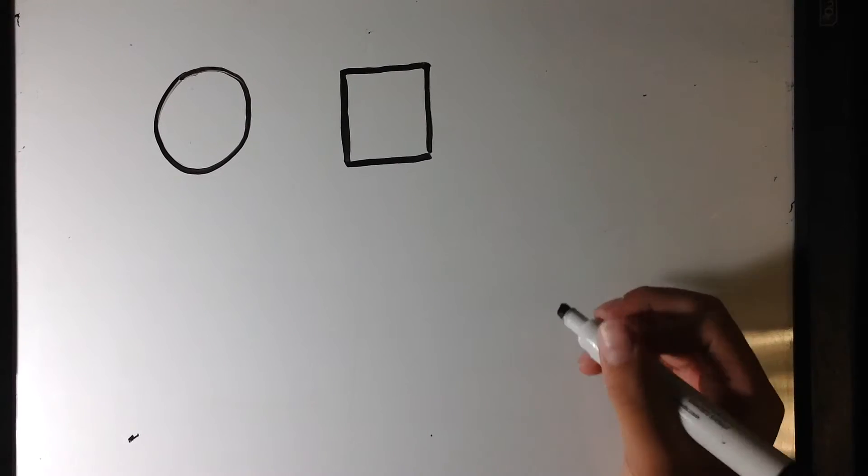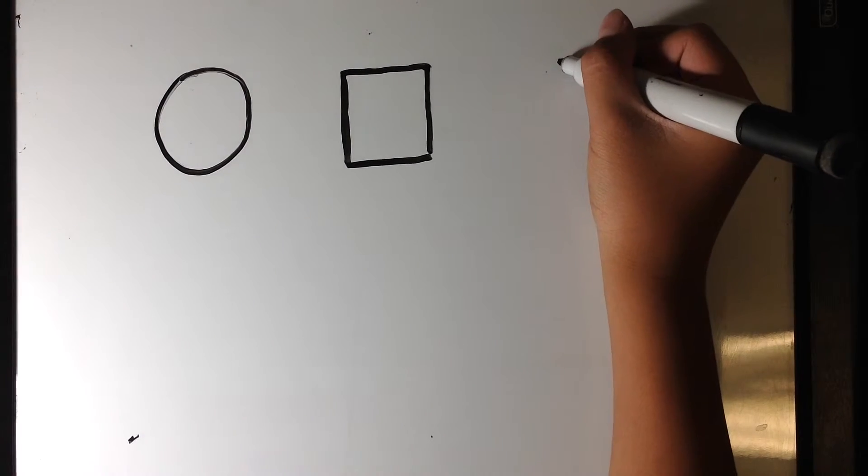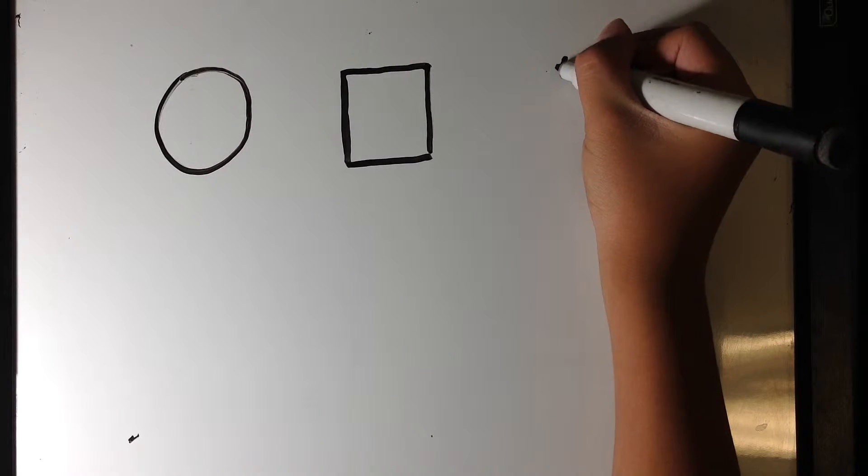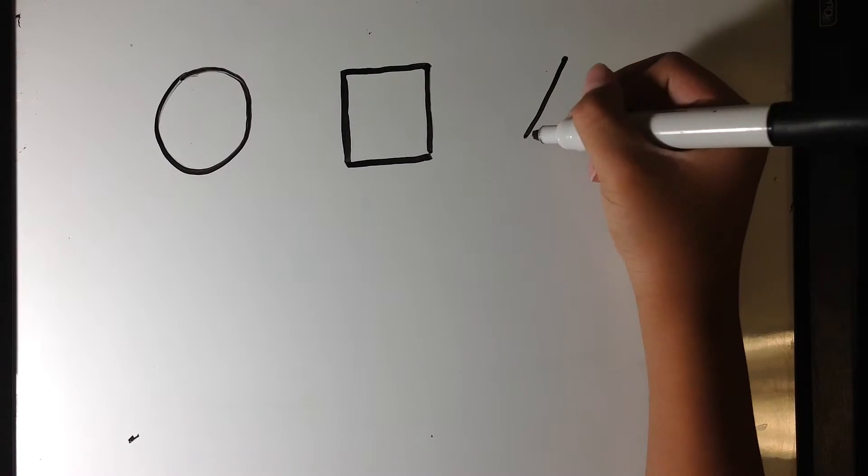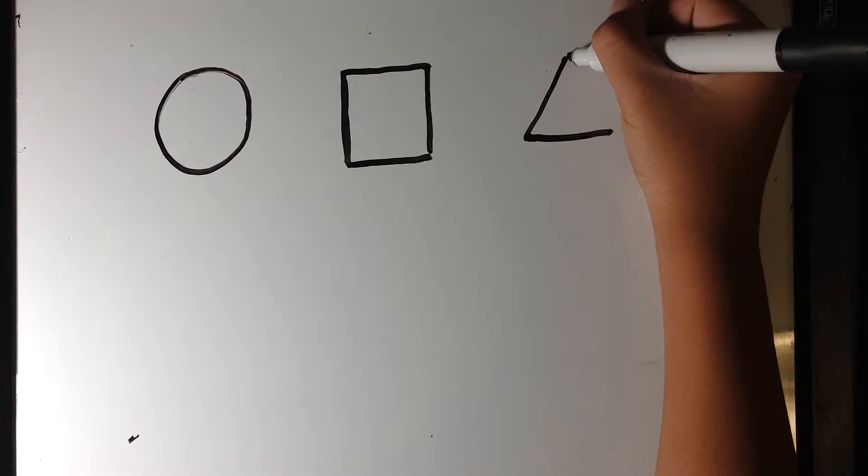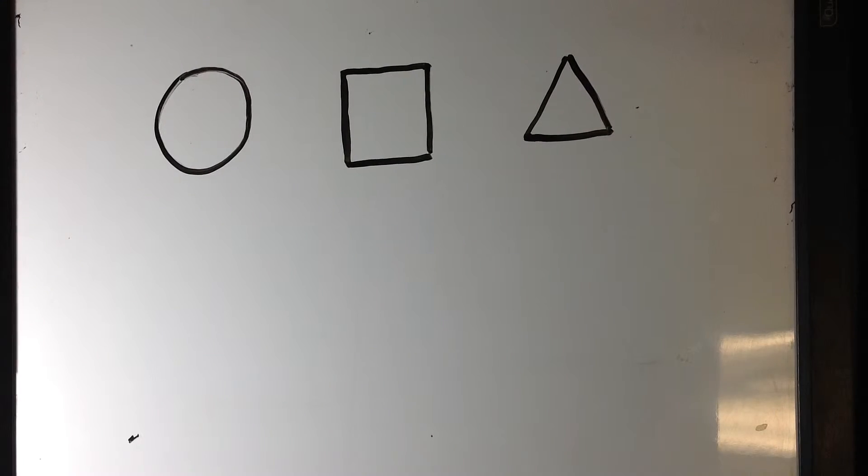Now I'm going to be teaching how to draw a triangle. First, just like the square, do one line down, another line. All these lines are even.